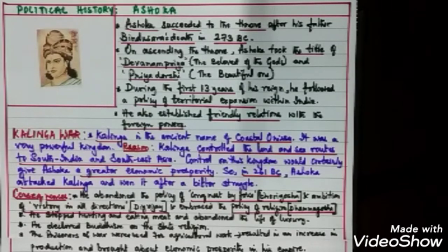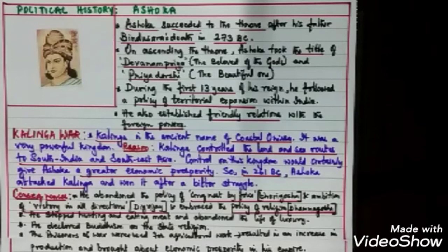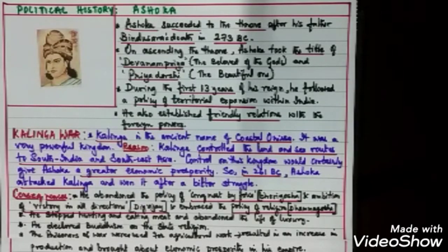The first consequence was that Ashoka abandoned the policy of conquest by force — Bherighosa — and his ambition of Dig Vijaya. He adopted instead the policy of Dhammighosa — conquest through religion. He also stopped hunting and eating meat, abandoning the life of luxury and starting to live a simple life.